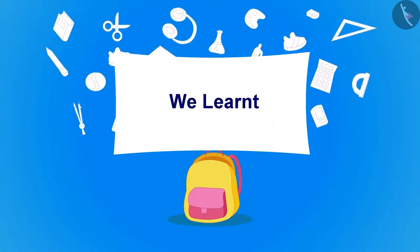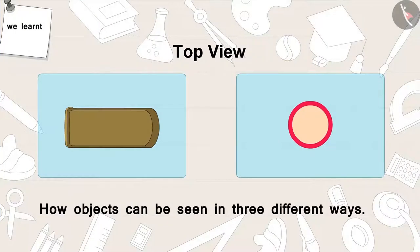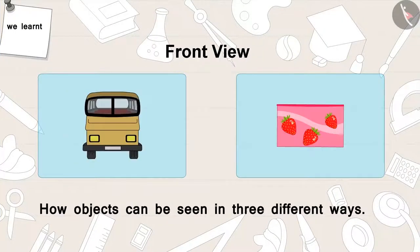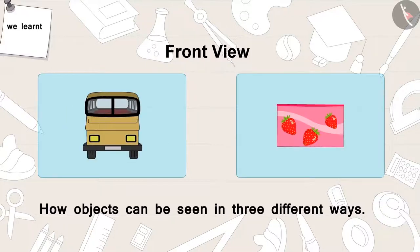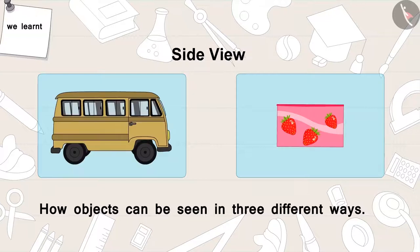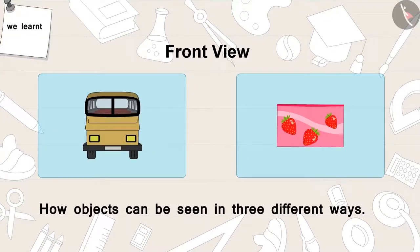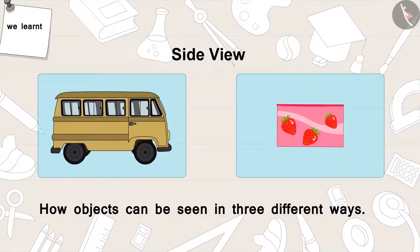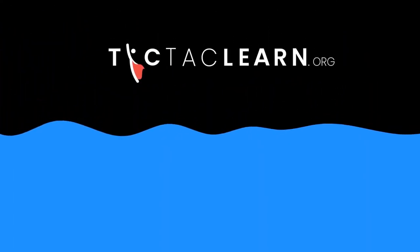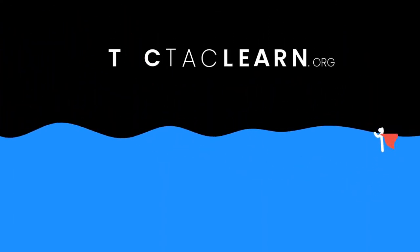Children, in this part we learnt how objects can be seen in three different ways — from above: top view; from front: front view; and from the side: side view. In the next video, we will learn more about this with the help of some interesting examples. Bye!